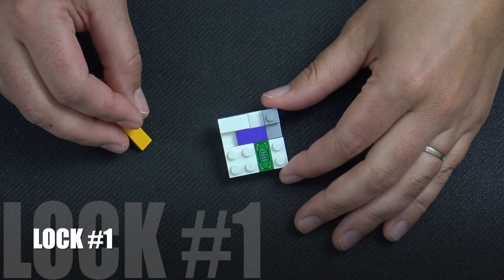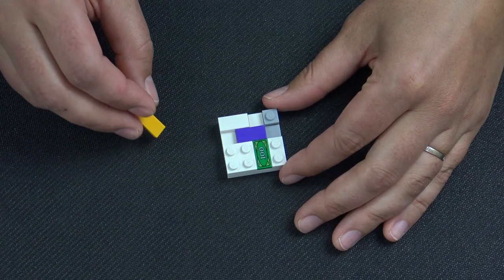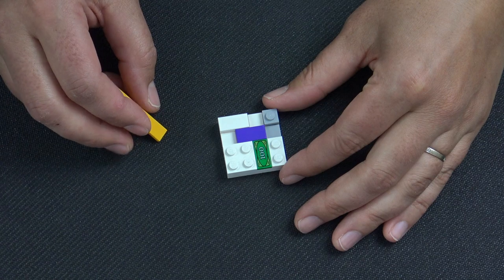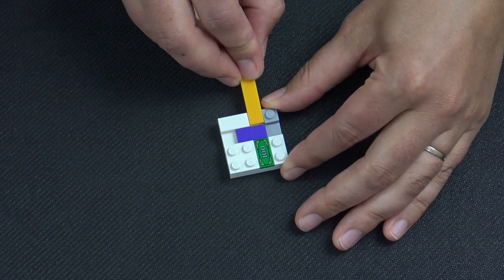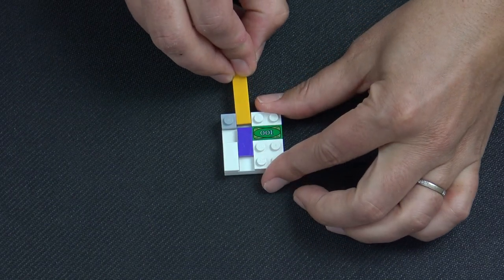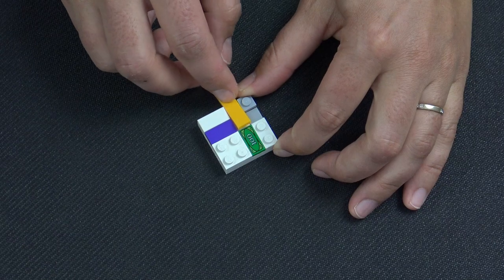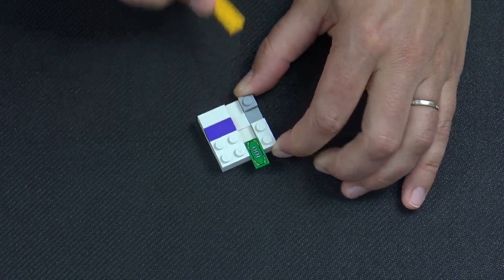This is the first lock. This particular lock has been used in probably almost all of our puzzle boxes. It's very basic. If you're trying to get out the money piece, it's blocked like this, but if you slide that slider out of the way, now that clears the path for the money to be pushed out.